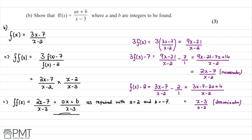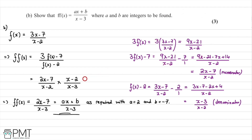Part B was worth three marks. The first mark is for correctly substituting (3x - 7)/(x - 2) into f(x). The second mark is for tidying up and cancelling the (x - 2) factors. The third mark is for reaching the correct conclusion and identifying a = 2 and b = -7.